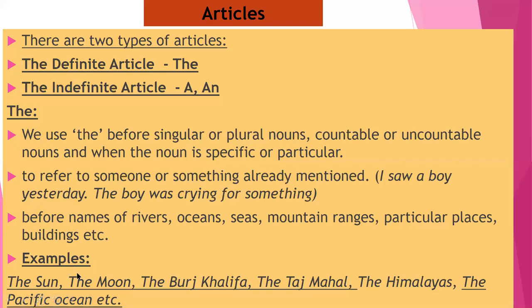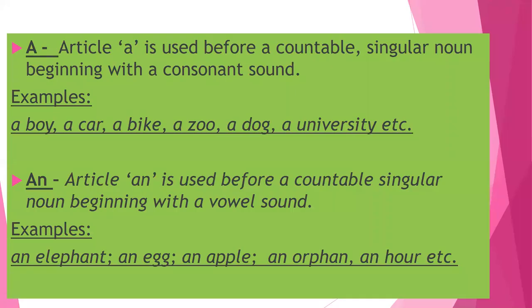Here are a few examples: the sun, the moon, the Burj Khalifa, the Taj Mahal, the Himalayas, the Pacific Ocean. So when we talk about a particular thing, a particular building, mountain ranges, or an ocean, then we use 'the'.